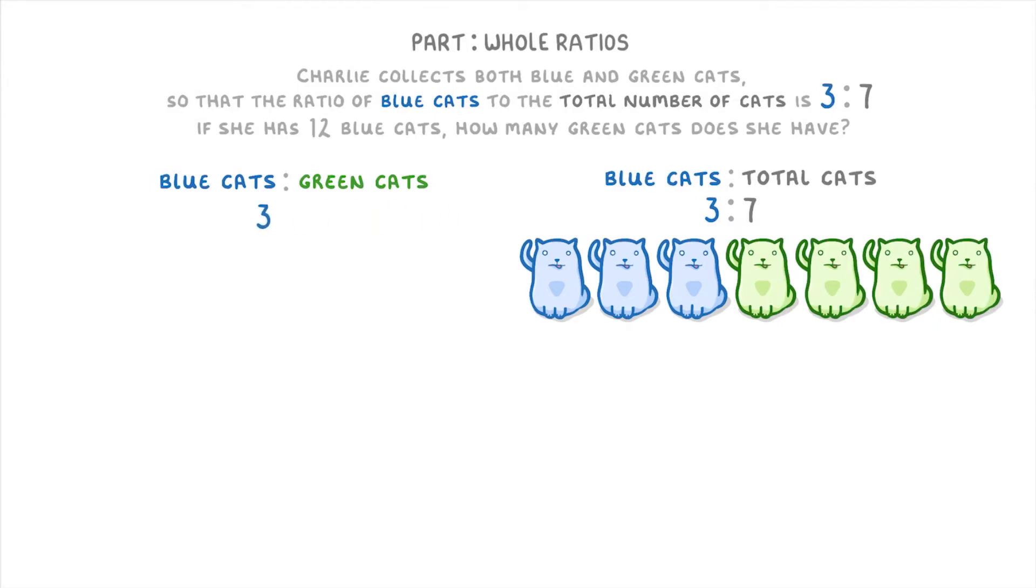So we know that for every three blue cats, there are four green cats. Or in other words, the ratio between them is three to four.